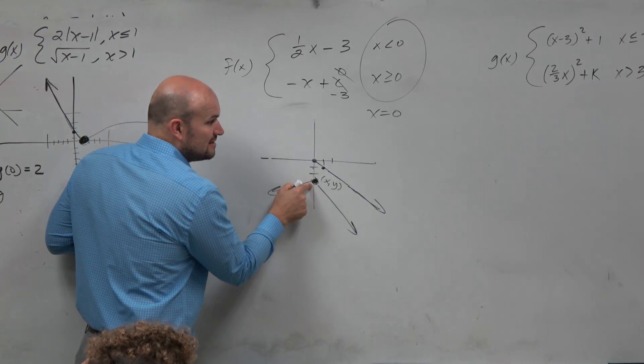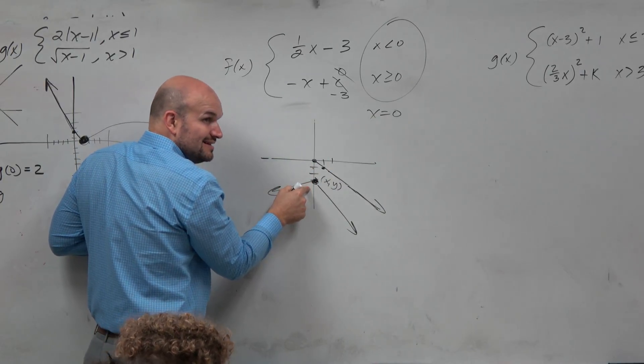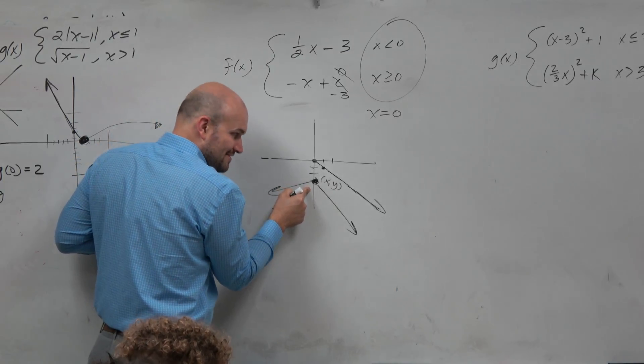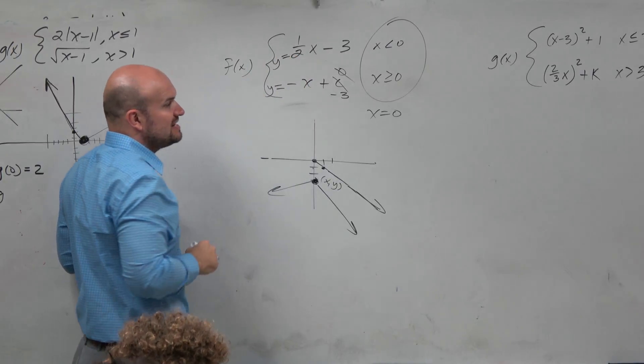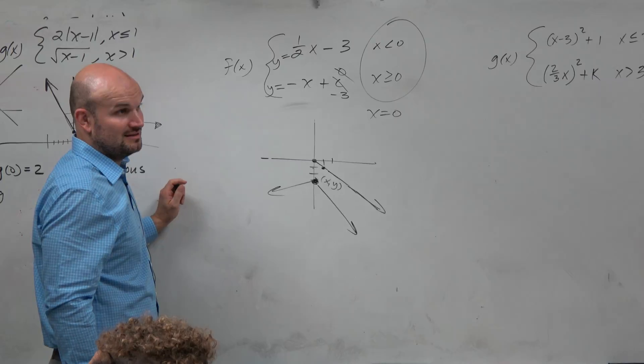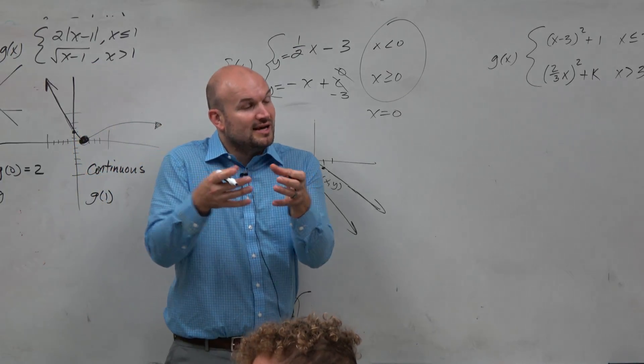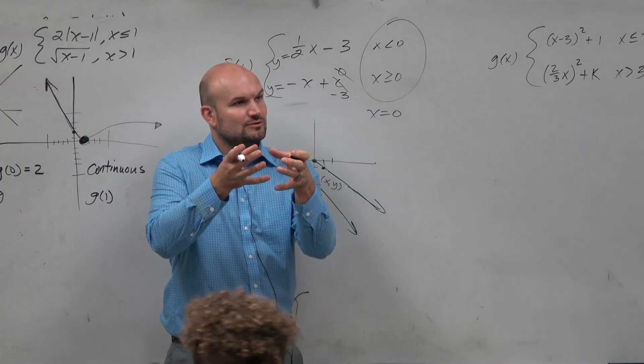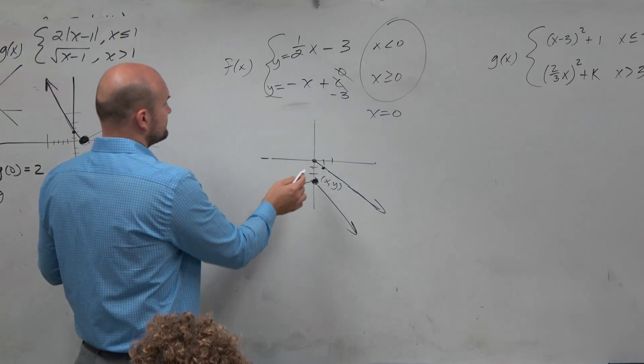Now if we want it to be continuous, they're going to have the same x value. But if they're going to have the same point, that means they have to have the same x and y value. So how do we mathematically represent them having the same y value? You can just set the two equations equal to each other. And that goes back to, if you remember in algebra 1, algebra 2, systems of equations. Set the y's equal to each other to solve for x, and then you can use substitution that way.